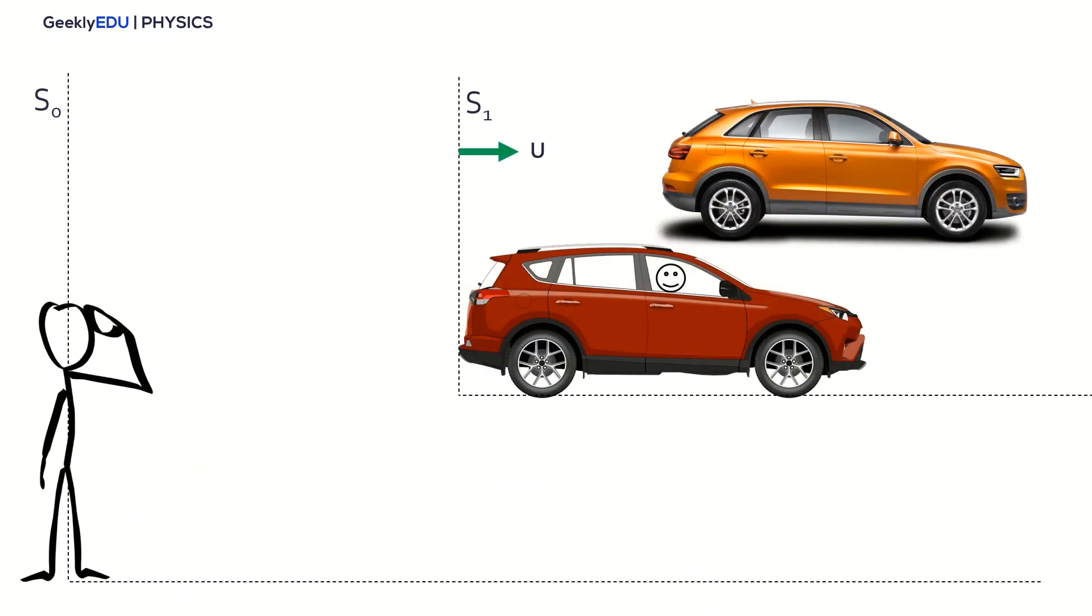So to better understand Einstein's first postulate, let's take a look into this example here. Here we have two inertial reference frames, S0, this guy here is standing still, he's not moving, and another reference frame S1 is moving at a constant speed, it's the guy in the car here. So both reference frames are inertial because they're not accelerating. So let's analyze the movement of the second car here according to both reference frames.